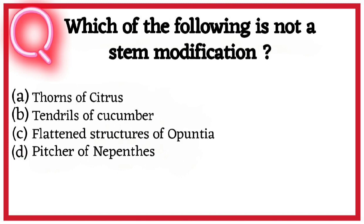Question twelve. Which of the following is not a stem modification? A. Thorns of citrus, B. Tendrils of cucumber, C. Flattened structures of Opuntia, D. Pitcher of Nepenthes. So correct answer hai option D. Pitcher of Nepenthes.